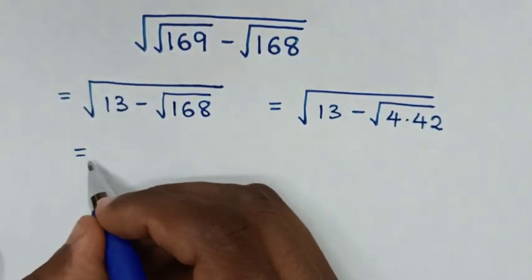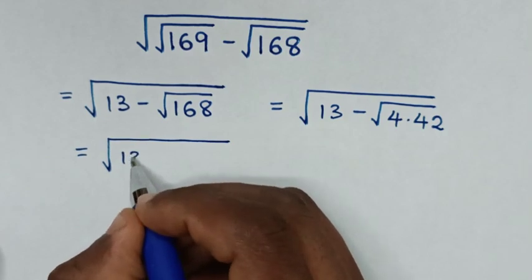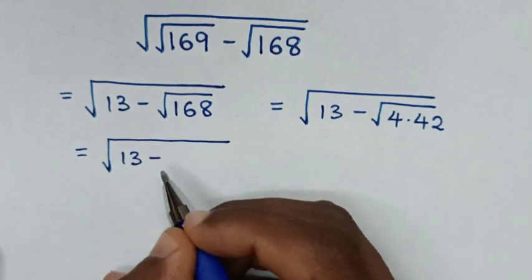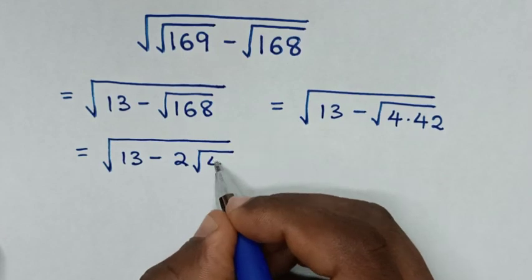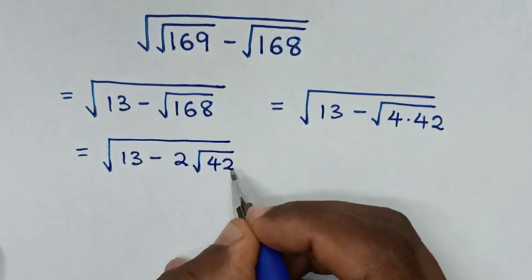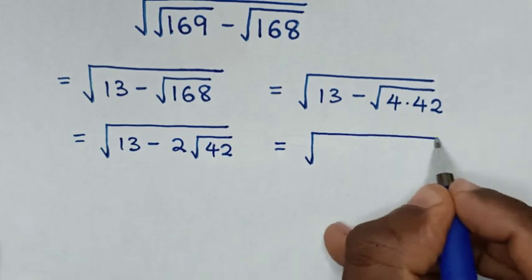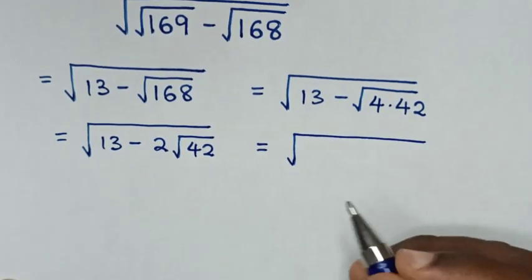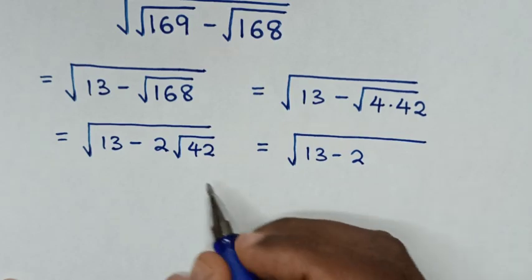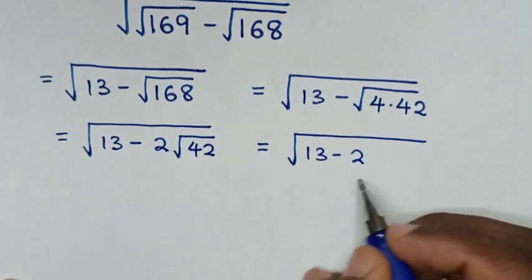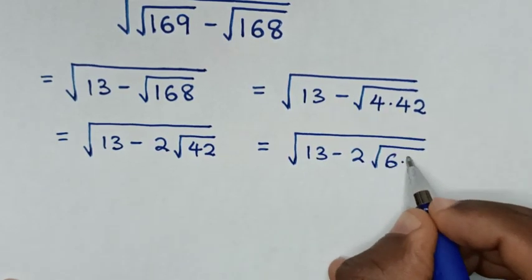Then it will be equal to square root of 13 minus square root of 4 is 2, times square root of 42. Then it will be equal to square root of 13 minus 2 square root of 42, which is the same as square root of 6 times 7.